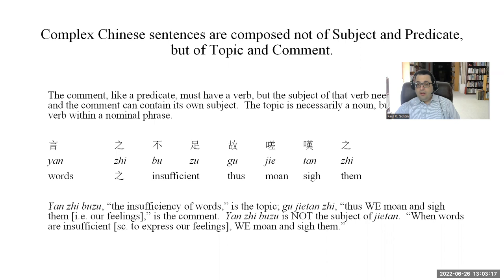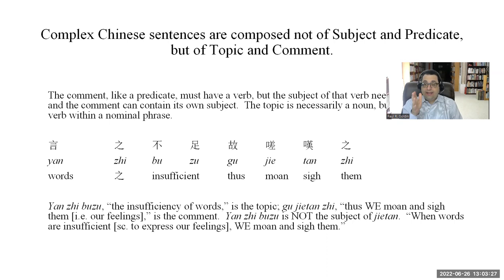That's about where the similarities with English end. Complex Chinese sentences are composed not of subject and predicate, but of topic and comment. This is true of modern Chinese as well. The comment, like a predicate in English, must have a verb, but crucially the subject of the verb in the comment doesn't have to be the topic. The topic is necessarily a noun — it can be abstract or concrete — it's the thing we're talking about. Then the comment is a comment about that topic.